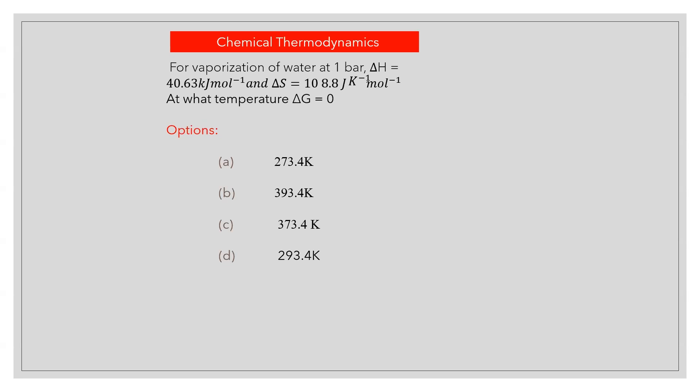For vaporization of water at one bar, ΔH = 40.63 kJ/mol and ΔS = 108.8 J/K/mol. At what temperature ΔG = 0? Answer C: 373.4 K.